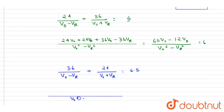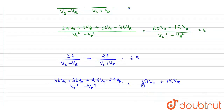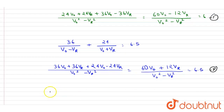Taking the LCM for the second case: 36 v-naught plus 36 vr plus 24 v-naught minus 24 vr, which simplifies to 60 v-naught plus 12 vr, divided by (v-naught squared minus vr squared), equals 6.5.